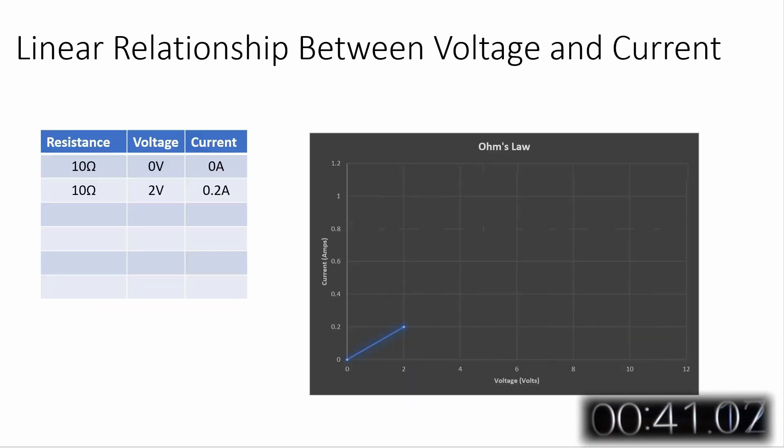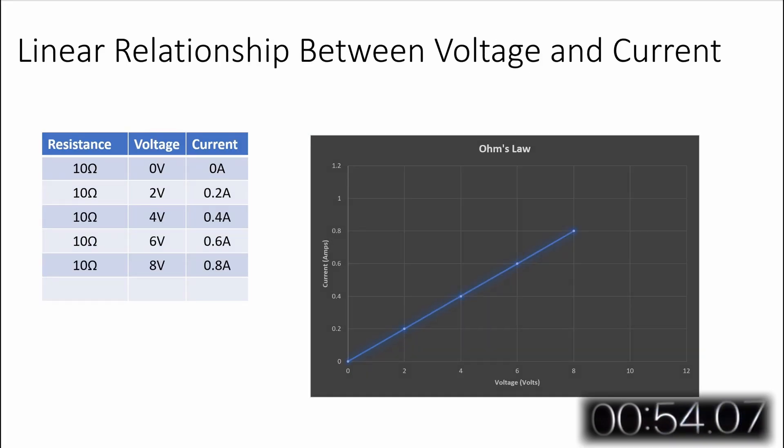This example shows the linear relationship between voltage and current in table and graphical form. The table and graph show different values of voltage across and current through a 10-ohm resistor. And as you can see, as the voltage increases, so does the current, and it does so in a linear way.